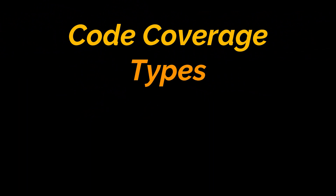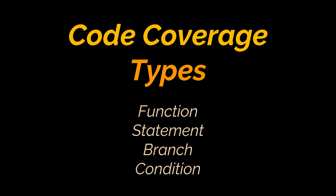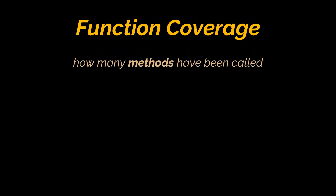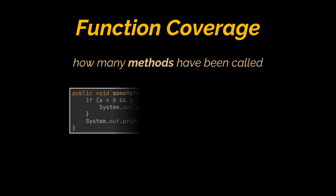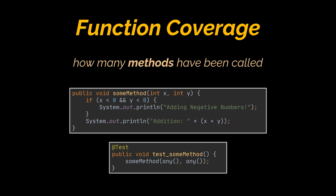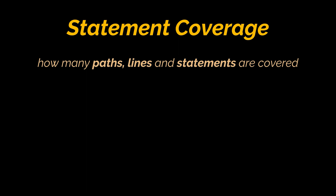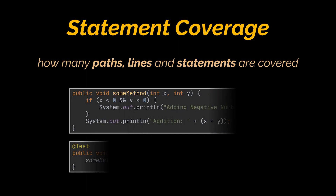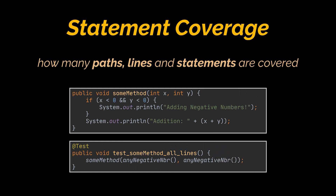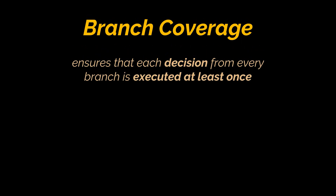The next thing we'll tackle is the types of coverage. We'll look at the four most important: function, statement, branch, and condition coverage. First, function coverage tells you how many of the functions or methods defined in your application have been called — to reach 100% function coverage, a method just has to be called at least once, no matter what arguments are passed. Statement coverage is very similar to line coverage; its main purpose is to cover all possible paths, lines, and statements in source code. You reach 100% statement coverage if every line in the function is executed, including both system outputs.